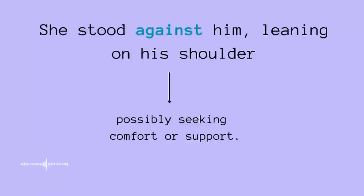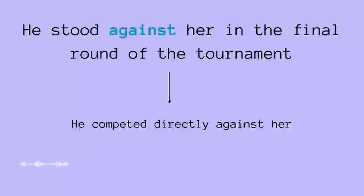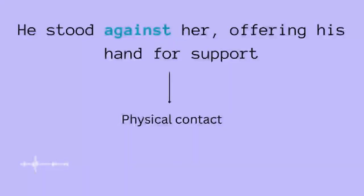Another example: 'he stood against her in the final round of the tournament' — speaking about competition. Versus 'he stood against her offering his hand for support' — meaning he is ready to help, perhaps financially or physically. That is why you need to be careful with 'against' — the rest of the sentence determines whether it means opposition or physical support.